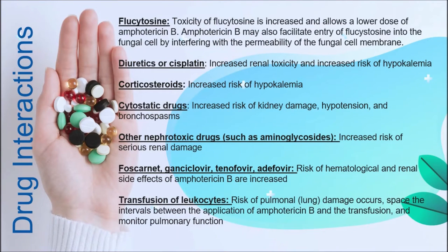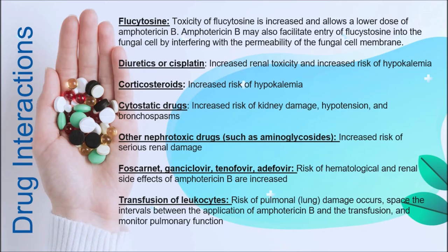Looking more closely at drug interactions: flucytosine toxicity is increased, and Amphotericin B allows a lower dose of flucytosine. Amphotericin B may also facilitate entry of flucytosine into the fungal cell by interfering with the permeability of the fungal cell membrane. Diuretics increase renal toxicity and the risk of hypokalemia. Corticosteroids increase the risk of hypokalemia. Cytostatic drugs increase the risk of kidney damage, hypotension, and bronchospasm. Other nephrotoxic drugs such as aminoglycosides increase the risk of serious renal damage.